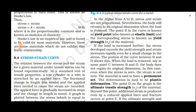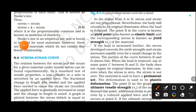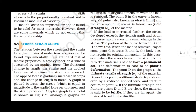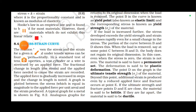From B to D, the body does not regain its original dimension — this is called the permanent set. The deformation is said to be plastic deformation. Point D is called the ultimate tensile strength of the material. Beyond this point, additional strain is produced even by a reduced applied force.